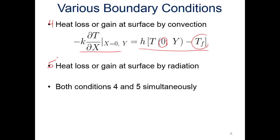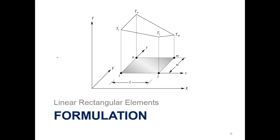We can have any of those cases, but what we'll focus on here is convection as we go through. So for linear rectangular elements — if you want a more initial run-through of this, it's in the previous presentation, which I'll leave a link for below in the notes — we're going to look at this linear rectangular element with nodes I, J, M, and N in the X and Y direction locally.